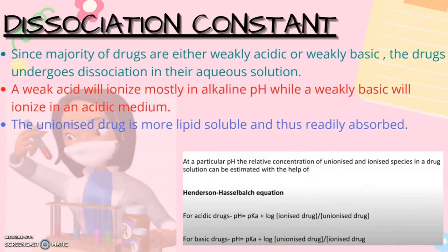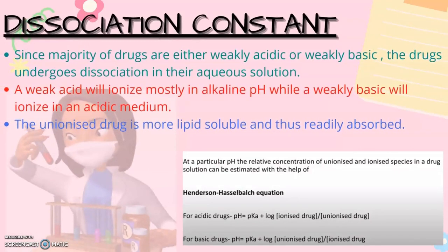Dissociation constant: since the majority of drugs are either weakly acidic or weakly basic, the drugs undergo dissociation in their aqueous solution. A weak acid will ionize mostly in alkaline pH while a weak base will ionize in an acidic medium. The unionized drug is more lipid soluble and thus readily absorbed. At a particular pH, the relative concentration of unionized and ionized species in a drug solution can be estimated with the help of Henderson-Hasselbalch equation, which is for acidic drugs: pH equals pKa plus log of concentration of ionized drug divided by unionized drug. For basic drugs: pH equals pKa plus log unionized drug divided by ionized drug.